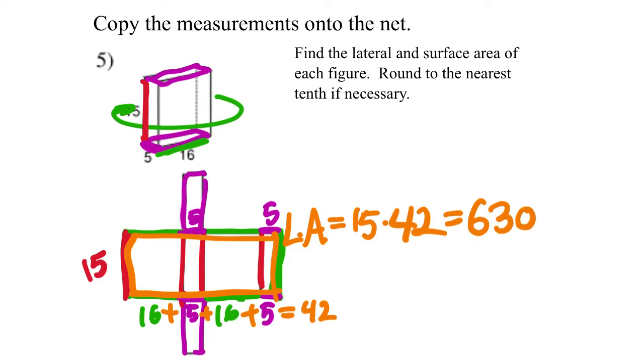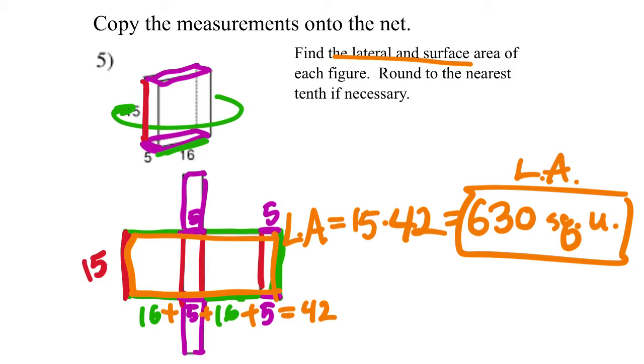I'm going to label this in square units. And since this is one of our answers, one of the lateral and surface area, I'm gonna label this: 630 square units, that's the lateral area.